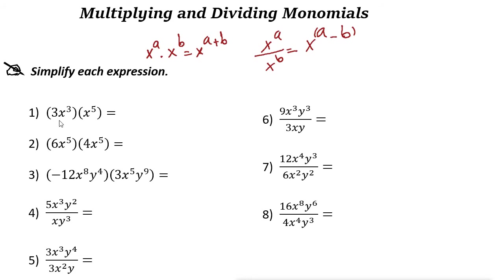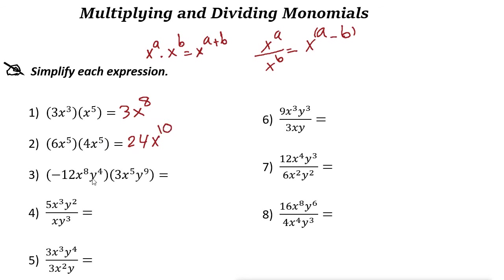Let's take a look at some examples. When you multiply, just multiply the coefficients: here it's 3 and 1, so 3 times 1 is 3, and the power is 3 plus 5 equals 8. Next, 6 times 4 is 24, x to the power of 5 plus 5 is x to the power of 10.